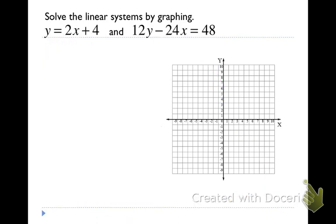Now let's look at solving this system. y equals 2x plus 4 and 12y minus 24x equals 48. Well again, the very first thing that we must do is solve each equation for y. So the first one is already solved for y. And so we can say our y-intercept on this one is 0, 4, and our slope is 2 over 1. So we only have to rewrite this one, which is kind of nice.